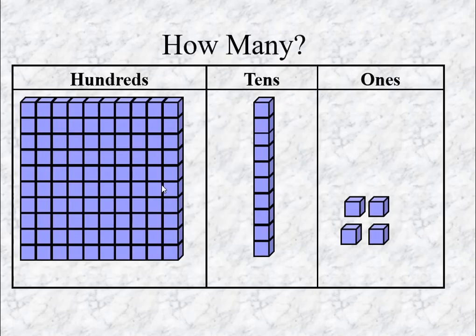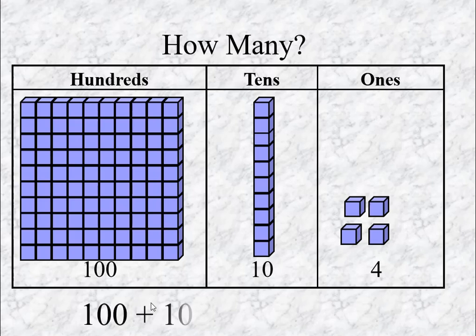How many hundreds are here, how many tens are here, how many ones are here? This one 100 and this one 1 ten and this one four ones. Total 100 plus 10 plus 4, we get 114.